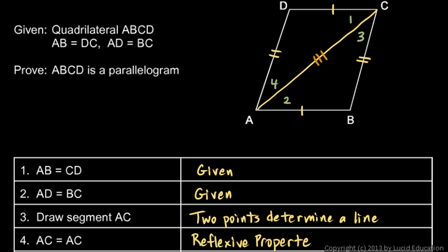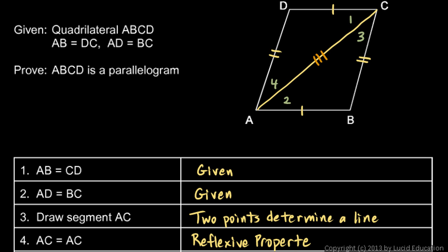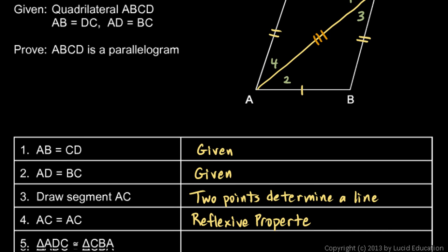So those two triangles are congruent by SSS — side, side, side. Let's write this to make sure the correspondence matches. Going around this triangle through the side marked with two marks and then the side marked with one, I write triangle ADC. Going around the other triangle the same way — through the side marked with two, then the side marked with one — that's triangle CBA. So triangle ADC is congruent to triangle CBA by side, side, side.